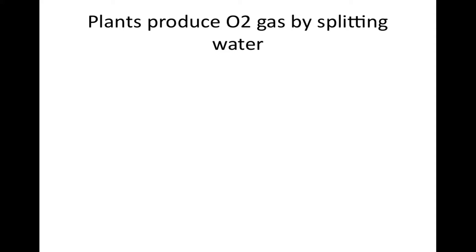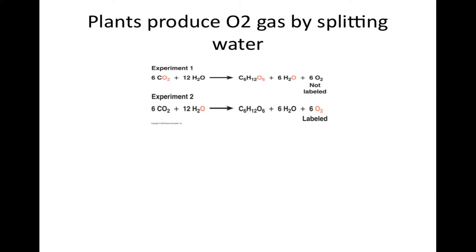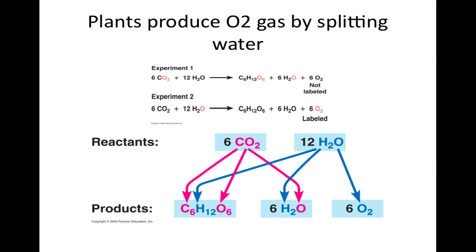Plants produce oxygen gas by splitting water. Experiment 1 shows that a tagged oxygen reactant in carbon dioxide only contributes oxygen atoms to glucose and water. Experiment 2 tagged the oxygen found in the water reactant and shows that oxygen gas is the only product receiving the tagged oxygen atoms from water, proving that water gives rise to the oxygen gas used for breathing, not carbon dioxide. Here the reactant carbon dioxide only contributes to the production of glucose and water, while the water reactant gives rise to all three products: glucose, water, and oxygen.